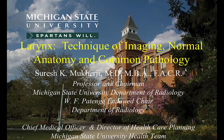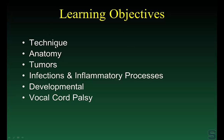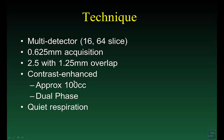Good morning. This presentation covers the larynx — technique, normal anatomy, and common pathology. From a technique standpoint, we are using multi-detector imaging with 0.625 mm acquisitions, approximately 2.5 mm reconstructions with 1.25 mm overlap. We always give contrast on our laryngeal CTs, approximately 100 cc, using a dual phase — 50 cc first, then wait, then another bolus of contrast.